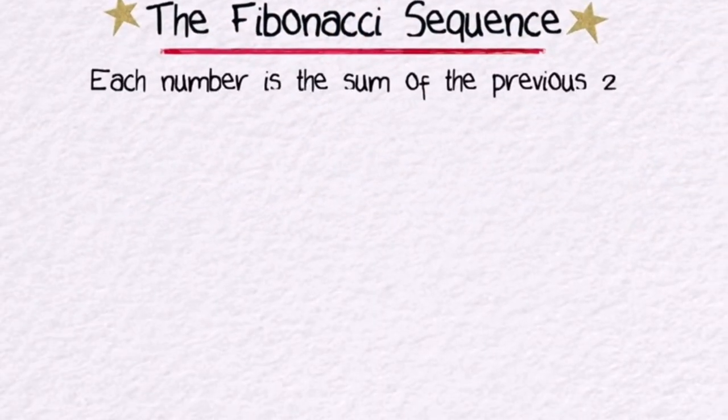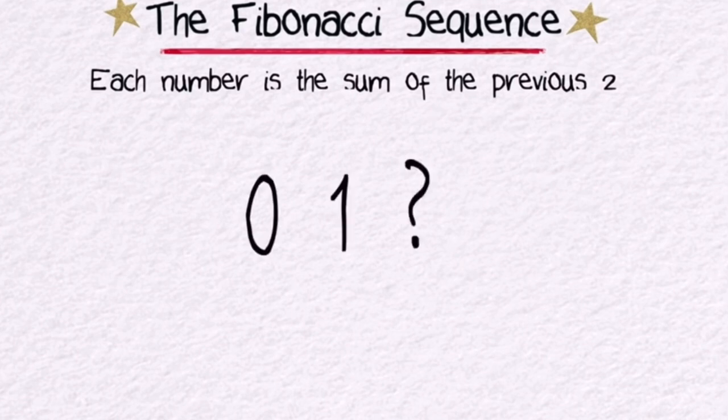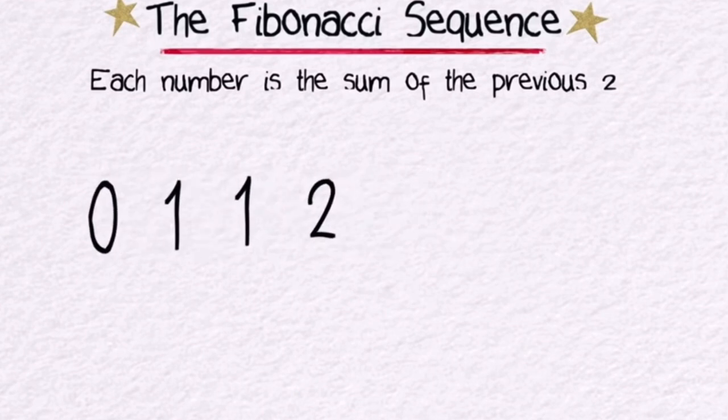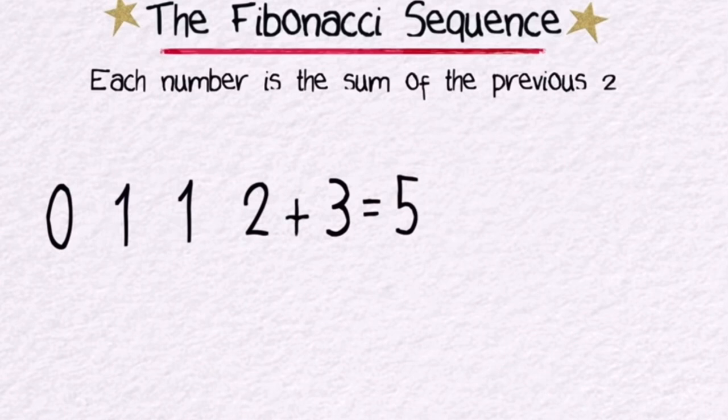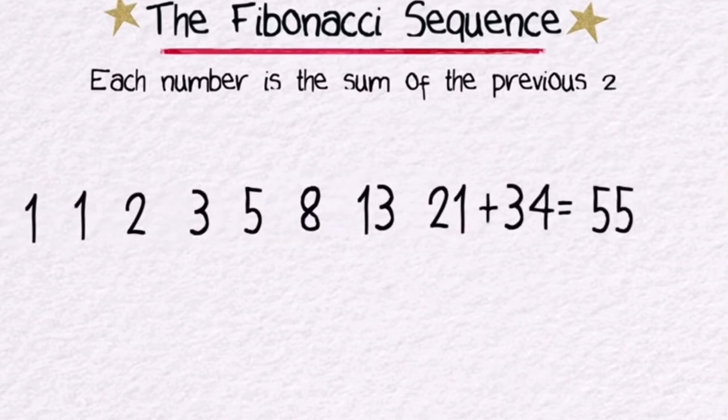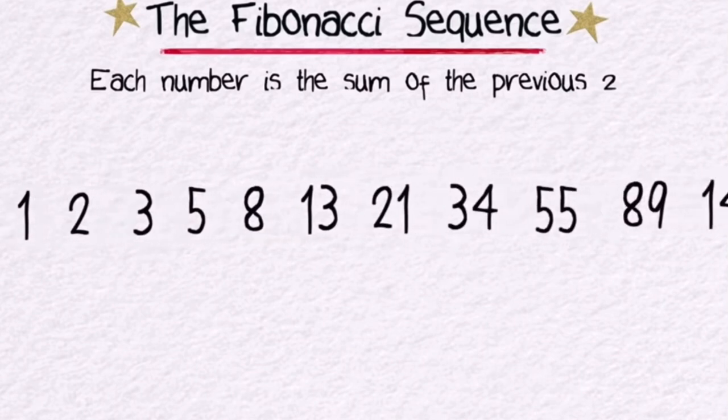For example, it begins with zero. Next is one. To find the third number, we add the last two numbers: zero plus one equals one. Continuing on, one plus one equals two. To get the next number, we will add the previous two again: one plus two equals three, two plus three is five, three plus five is eight. We will then get 13, 21, 34, 55, 89, and so on.